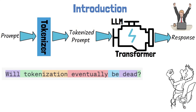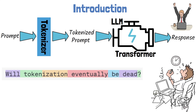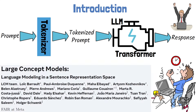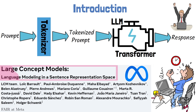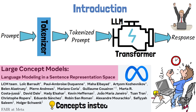However, this method is different from how humans analyze information and generate creative content. Humans can operate at multiple levels of abstraction, far beyond individual words. In this video, we explore a recent research paper from Meta that aims to bridge that gap. The paper is titled 'Large Concept Models: Language Modeling in a Sentence Representation Space,' and it introduces a new architecture called Large Concept Models, or LCM for short.